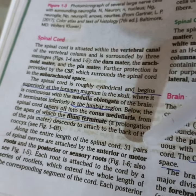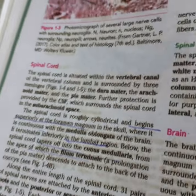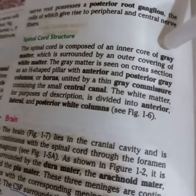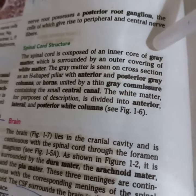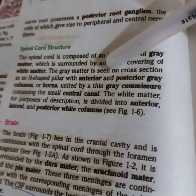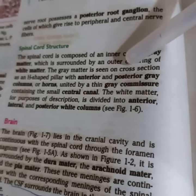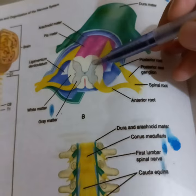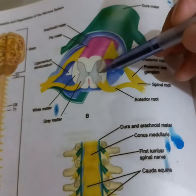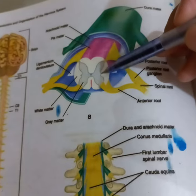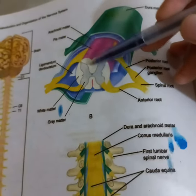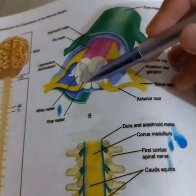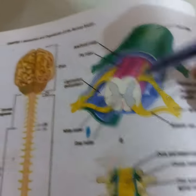We have the anterior motor root and the posterior sensory area of the spinal cord. The thoracic and upper regions have lateral columns. There is the posterior white column, the dorsal white column on the back side, the ventral white column, and the lateral white column. There are many tracts within these columns which we will study in detail.